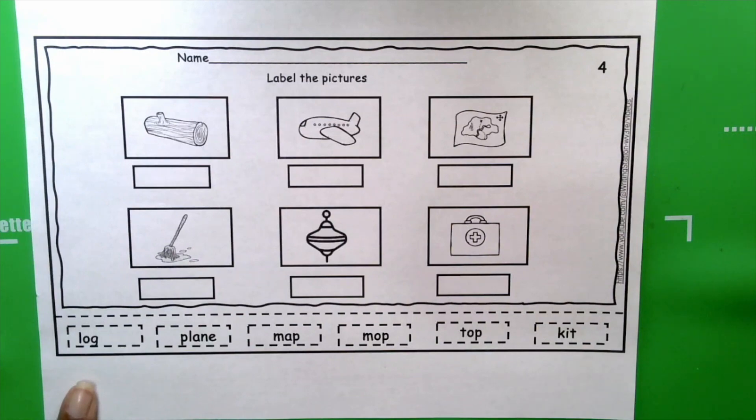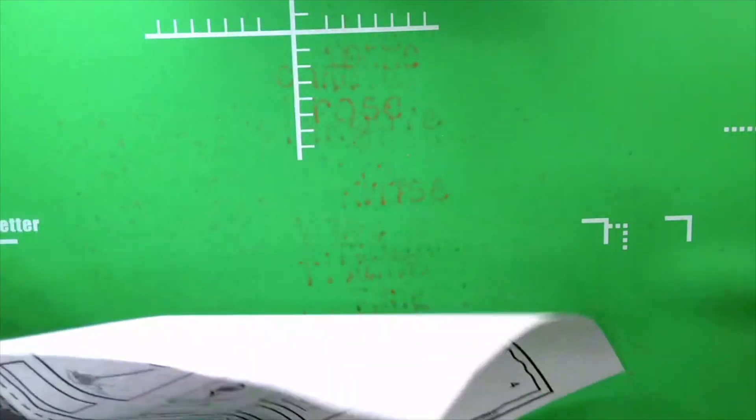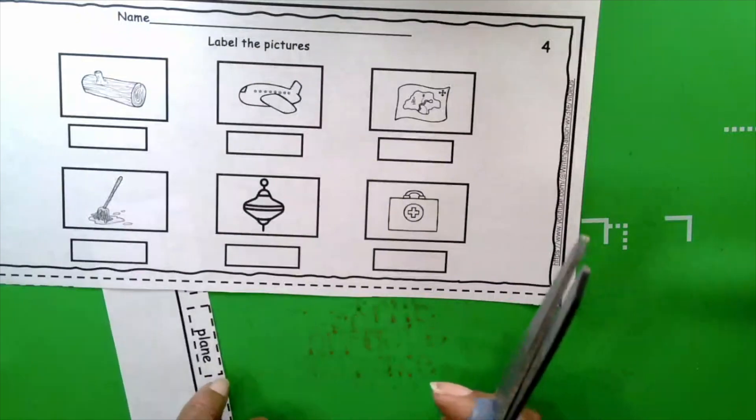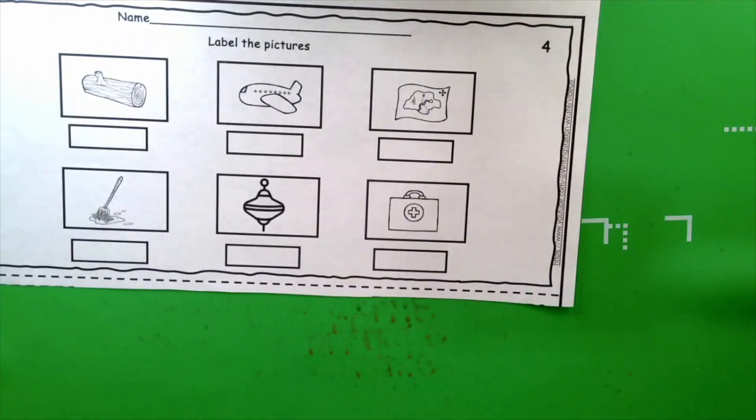First thing you're going to need is your scissors. We're going to cut out all the words. There should be six words and six boxes. If you've worked with me before, you know that I like to do all my cutouts at once. That way I don't have to go back and forth cutting. Cut once and you're done. Just be careful not to cut the word, and it doesn't have to be a perfect cut.